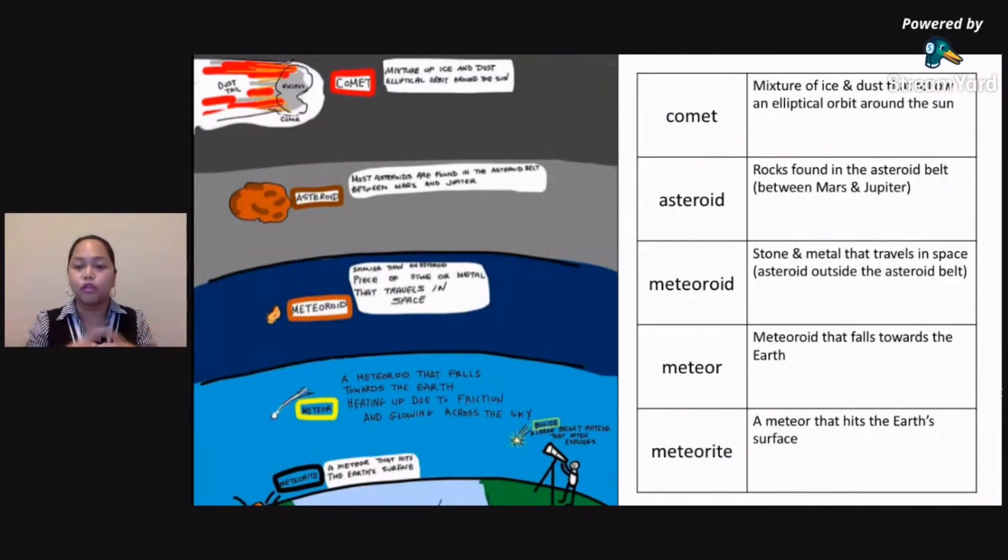So medyo oval po siya, oblong. Now, comets do not have their own light. They are lighted, they are lit when they come very close to the sun. So because of the heat coming from the sun, that's when they make the glow.